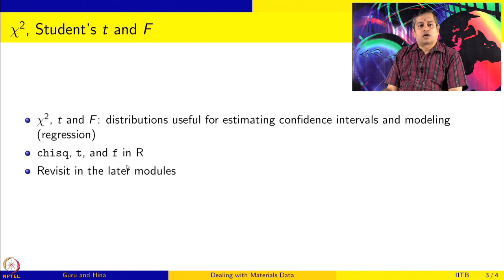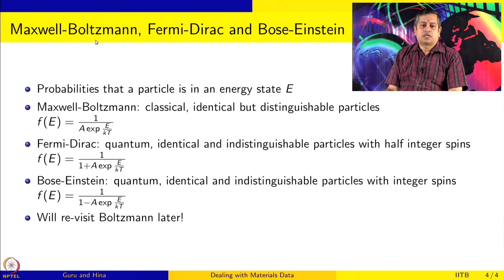One more class of distributions which are very important, and some of you might have heard some of these, is the Maxwell-Boltzmann, Fermi-Dirac, and Bose-Einstein distributions. These give probabilities that a particle is in an energy state E.